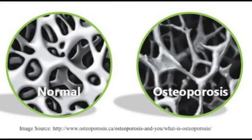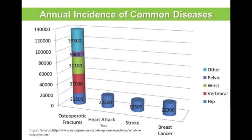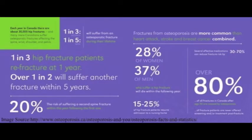Osteoporosis is a disease which slowly makes our bones weaker and more brittle. There are two types of osteoporosis: primary and secondary. We all experience some degree of bone loss as we age, and primary osteoporosis is just a larger degree of bone loss than normal. This is common with women aged 60 and up. Secondary osteoporosis occurs as a result of certain medications, such as cancer drugs, or if they have other conditions such as chronic kidney or liver disease. For this video we will be focusing on primary osteoporosis.